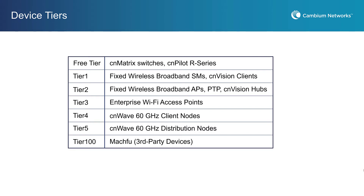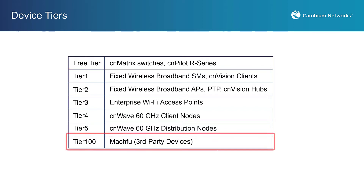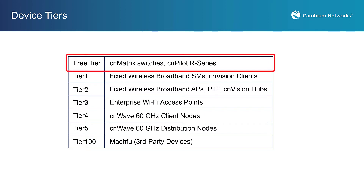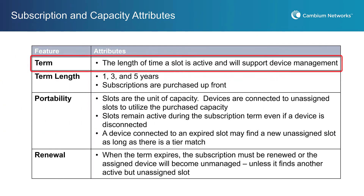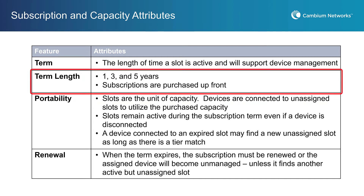CNMeisterOx subscription prices for slots are based on device tiers and subscription term length. Each Cambium product is assigned to a device tier. Today we have seven device tiers — five paid device tiers mapped to Cambium devices, one paid device tier mapped to third-party devices, and additional paid tiers may be added in the future. There is also a special device tier called the free device tier, or Tier Zero — there is no charge for this tier. Certain devices such as CN Matrix switches will be automatically assigned to Tier Zero. The subscription term is the other price factor. Available subscription terms are one, three, and five years. Subscriptions are purchased up front.